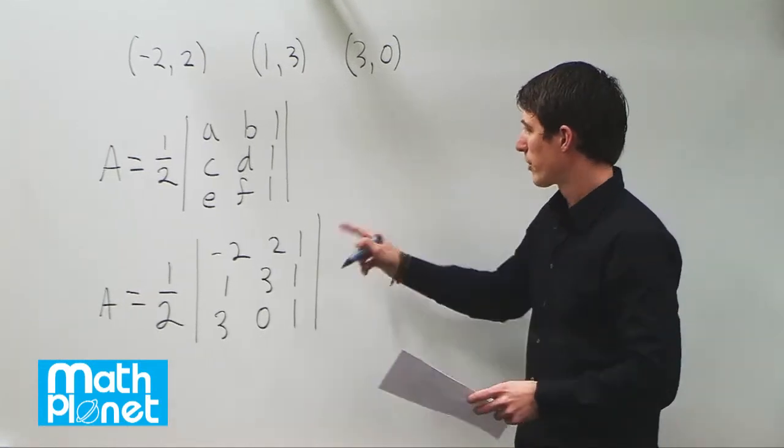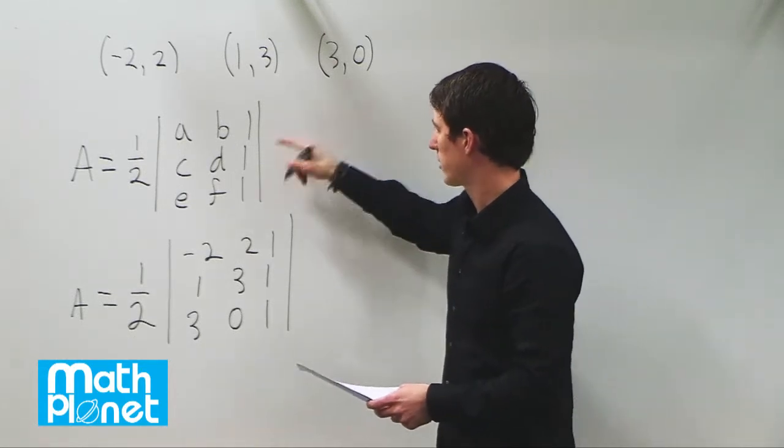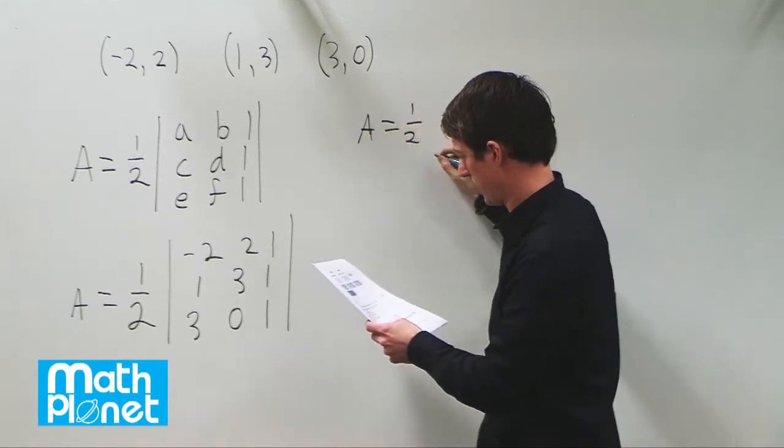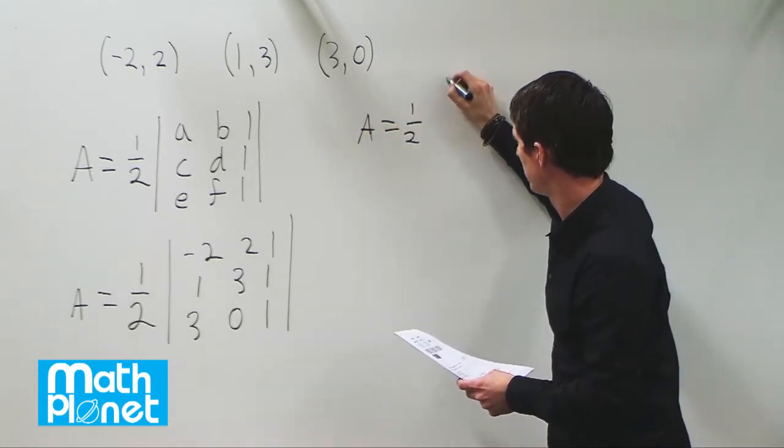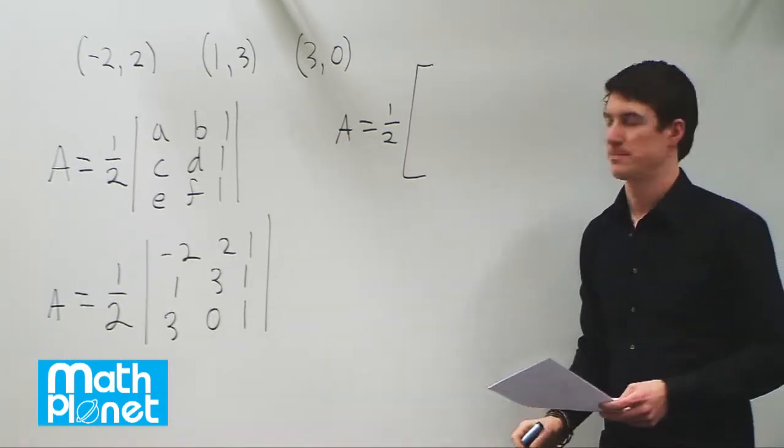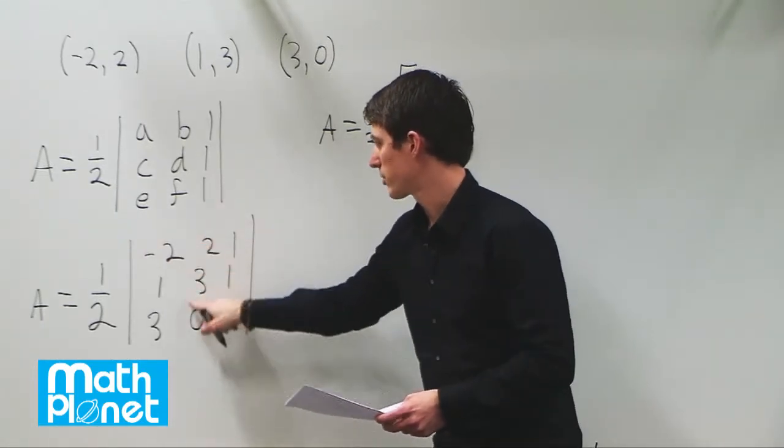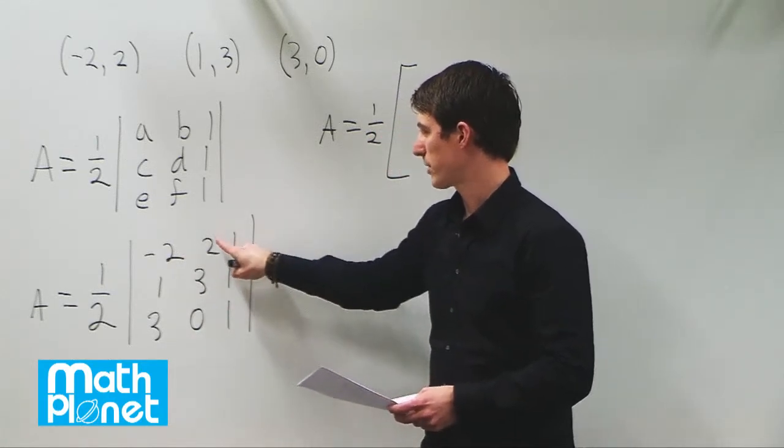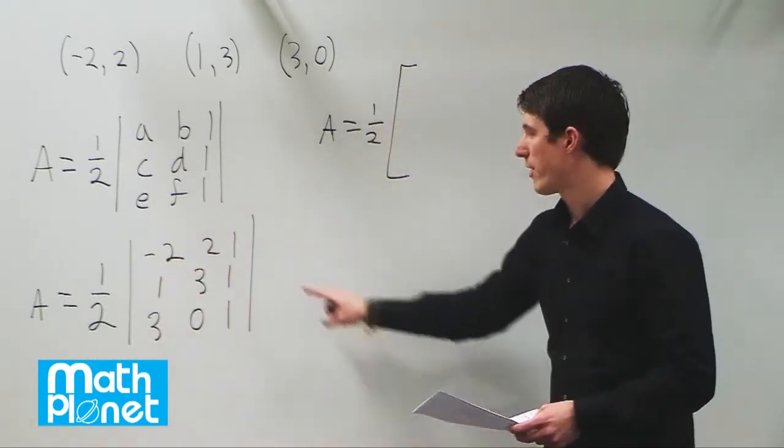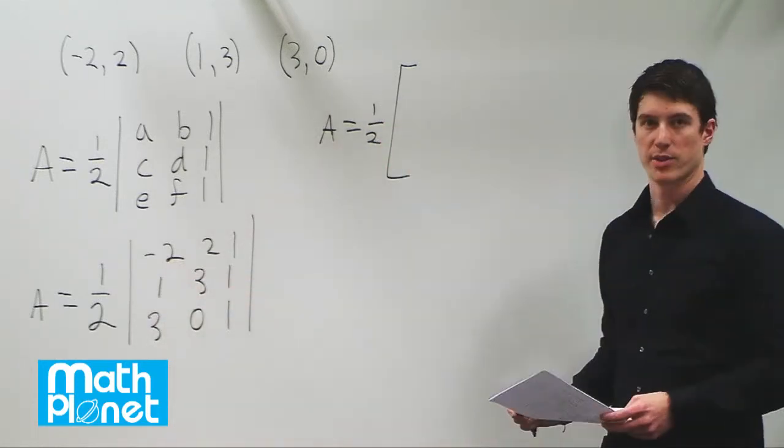From the area matrix, to find the determinant, we have area equals 1 half, and then we need to have a big bracket where we're going to have three second order determinants. The first one is this value times the determinant of this matrix, and then the second one is minus this times the determinant of this and this, and then the third one will be this value times the determinant of this.